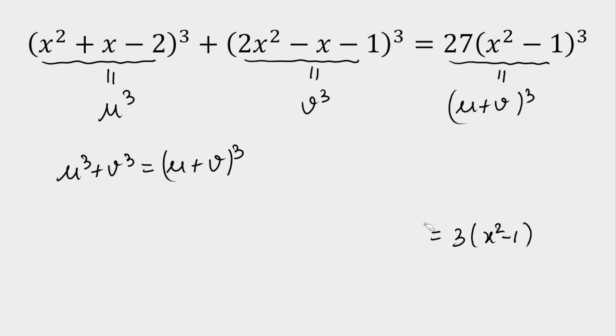So let's solve this. If you expand, you get u³ + v³ = u³ + v³ + 3uv(u + v). u³ and v³ cancel out on both sides, and what remains is uv(u + v) = 0.